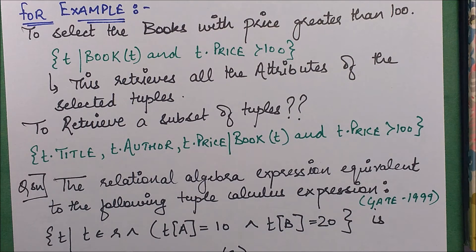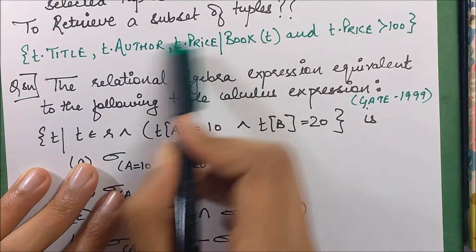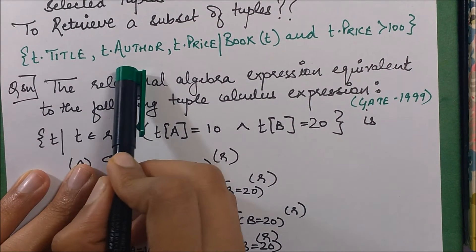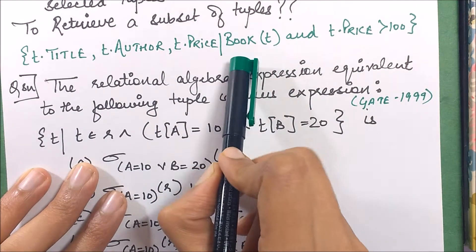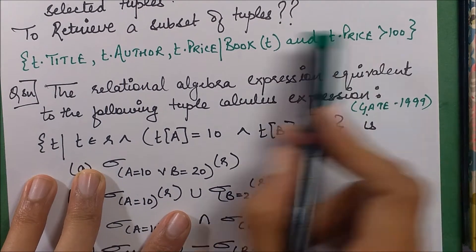What if I require only a certain number of attributes? For that, I'll specify those attributes as well. I specify: I need the title, author, and price of those books which belong to the book table and whose price is more than 100.